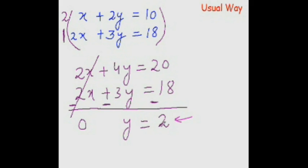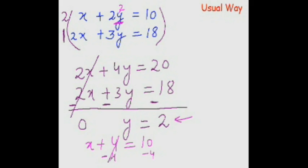Now put this value of y in any of these two equations to get the value of x. Substituting y equals 2 gives x plus 2 times 2 equal to 10, which becomes x plus 4 equal to 10. Subtract 4 from both sides, so x equal to 6. And that is the answer: x equal to 6, y equal to 2.